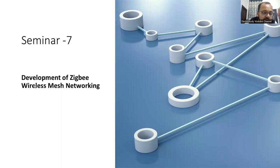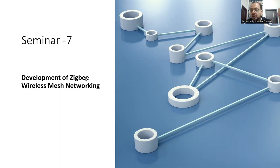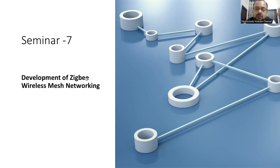Seminar topic number 7: Development of Zigbee Wireless Mesh Networking. You need to explain this with the help of modeling. Try to add some mathematical modeling since you come from a technical background. Whenever you go for a presentation, have a neat block diagram and mathematical modeling to support your explanation. If the topic is convenient, try to extend it into a mini project — you can do a full project, which will be helpful for your career.